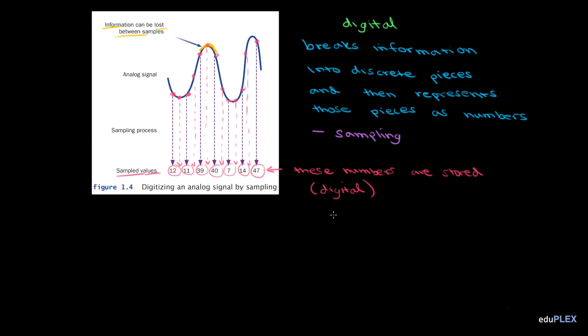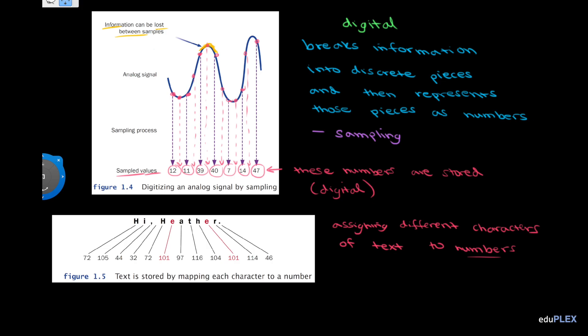You could also store information digitally by assigning different characters of text to numbers. For example, if I'm writing something in Notepad or Microsoft Word, the text is stored by mapping each character to a number. Here, every individual character, like the first letter, the capital H, that's mapped to 72.